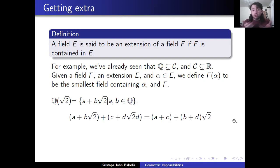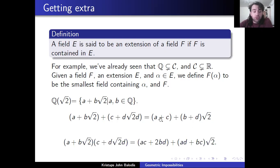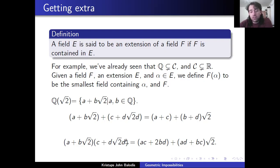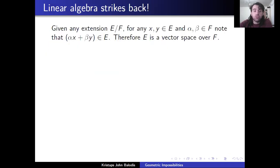If you simply take two numbers of this form — a plus b root two plus c plus d times root two — that gives a plus c plus (b plus d) times root two, which is of the required form. And the same thing with multiplication: a plus b root two times c plus d root two, if you work out the arithmetic, you again get the form of a rational number plus a rational number times root two, so it's certainly closed under those operations.